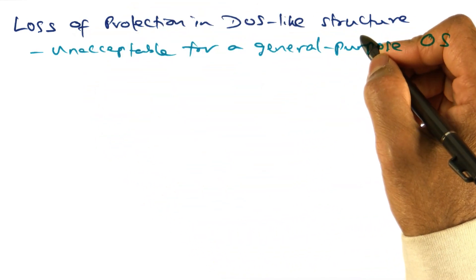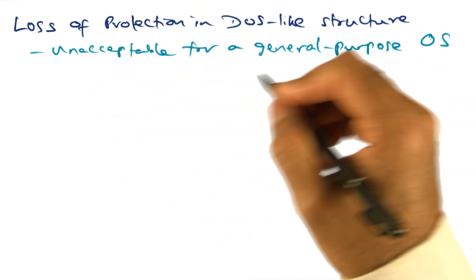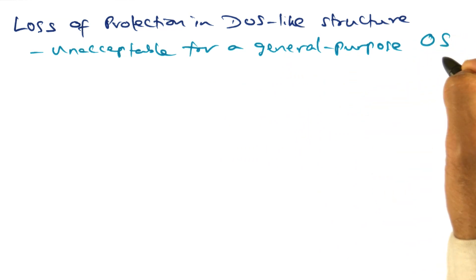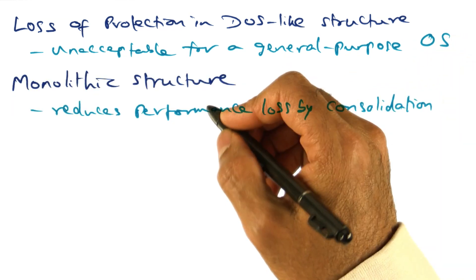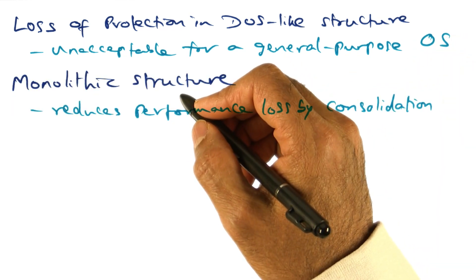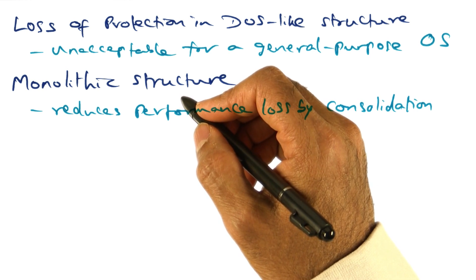But this loss of protection with the DOS-like structure is simply unacceptable for a general-purpose operating system today. On the other hand, the monolithic structure gives the protection that is so important.